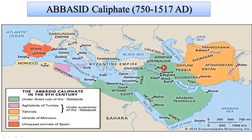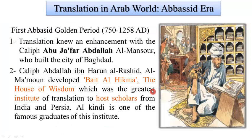With the advent of the Abbasid caliphate, the civilization was reduced in territorial extent, but the Abbasids were more powerful intellectually. Translation witnessed its peak when Bayt al-Hikmah, the House of Wisdom, was established — the greatest institute of translation — where scholars from India and Persia were hosted. Al-Kindi is one of the famous graduates of this institute.